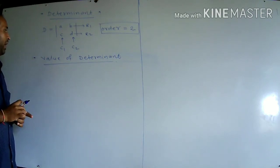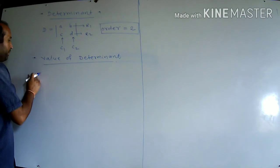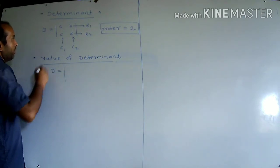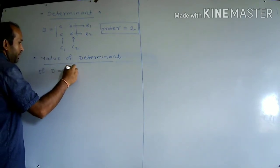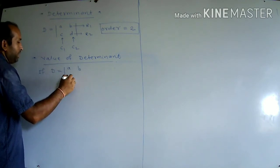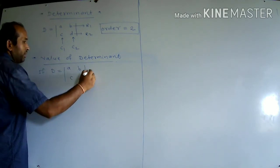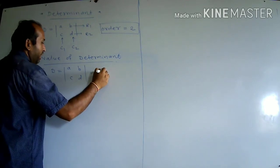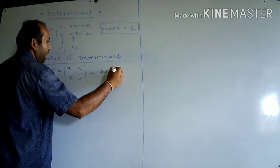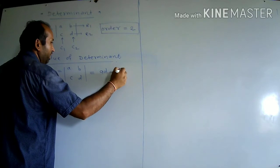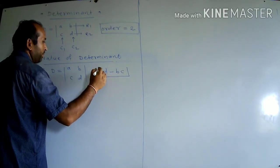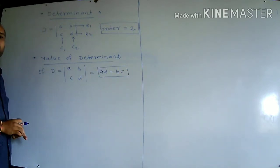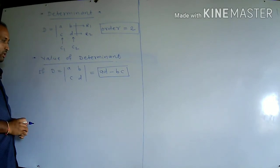To find the value of a determinant, take the same example with elements A, B, C, D. Its value is A into D minus B into C.